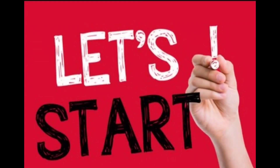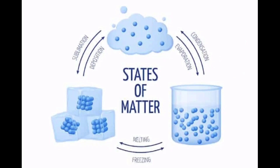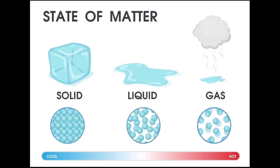We all know that matter is found in three states on Earth: solid, liquid, and gas. Solid turns into liquid after providing heat, and liquid turns into gas after giving more heat. Solid, liquid, and gas are all made up of many particles.